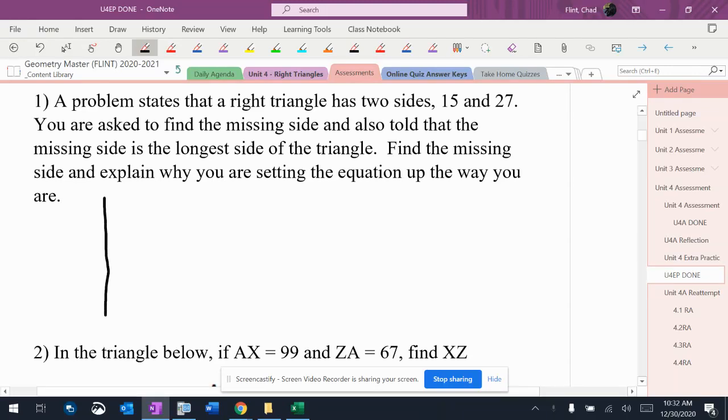We have a right triangle, and we're asked to find a missing side of it. So we're going to draw a right triangle. It doesn't matter what it looks like. It says two sides are 15 and 27. Now, this doesn't tell me where they go, so I'm going to read the rest of it here.